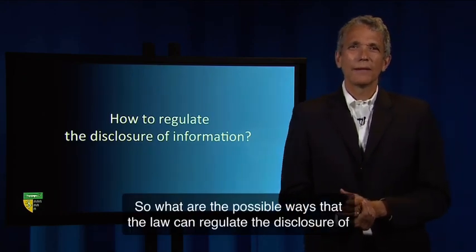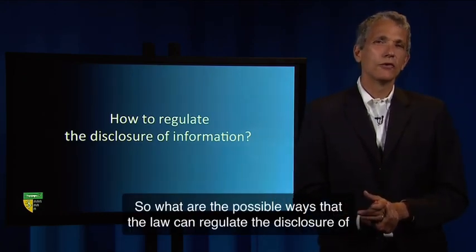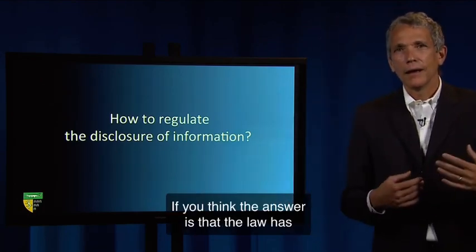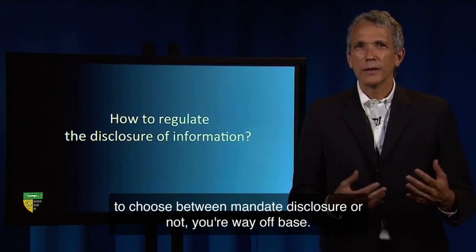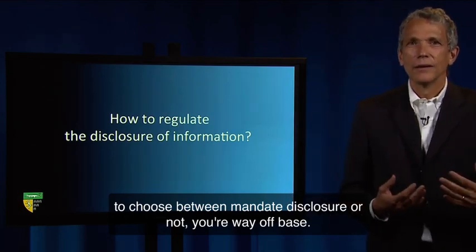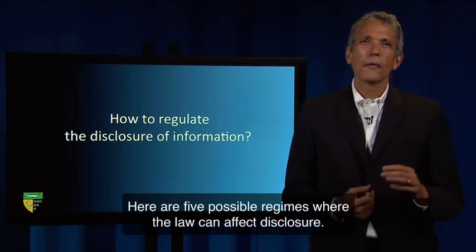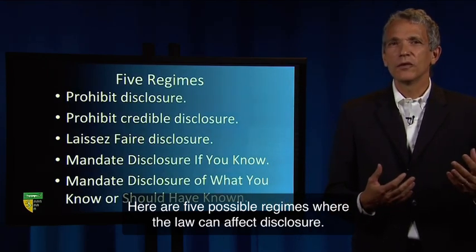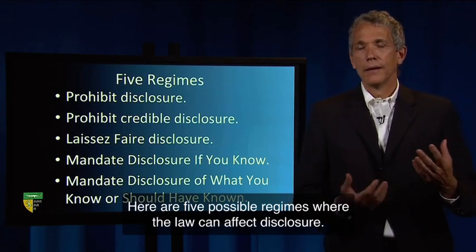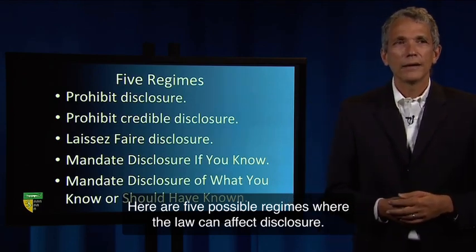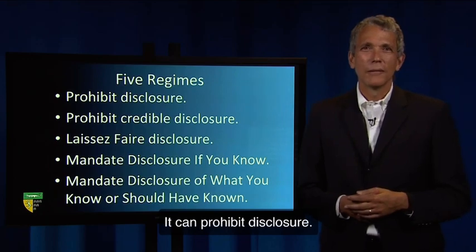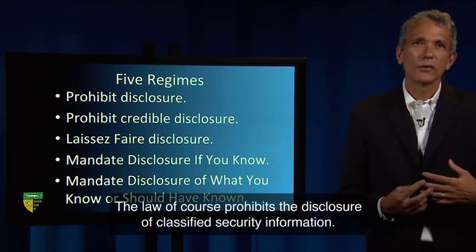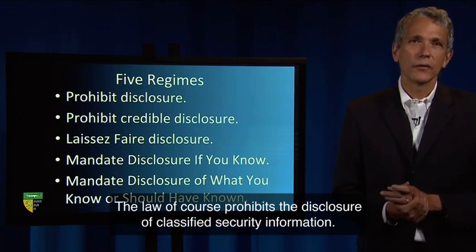What are the possible ways that the law can regulate the disclosure of information? If you think the answer is that the law has to choose between mandate disclosure or not, you're way off base. Here are five possible regimes where the law can affect disclosure. It can prohibit disclosure. The law, of course, prohibits the disclosure of classified security information.